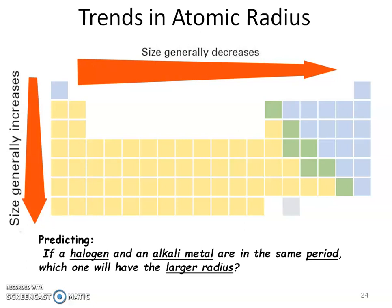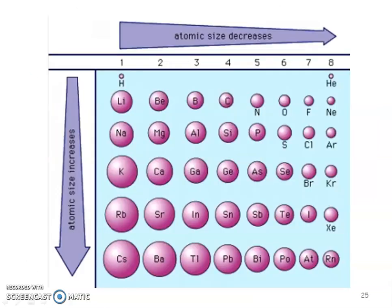So if a halogen and an alkali metal are in the same period, which one would have the larger radius? So again, if we have an alkali metal, which is here, and a halogen, which is here, hopefully you came up with the alkali metal would have a larger atomic size. And again, just another visual.